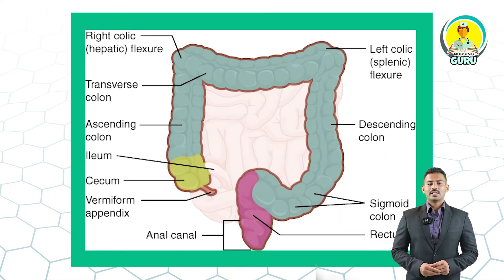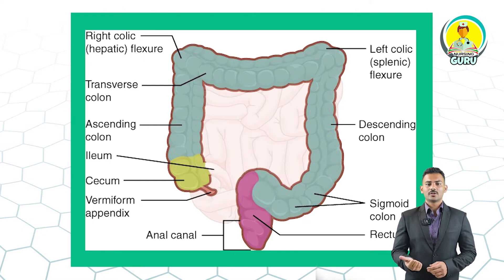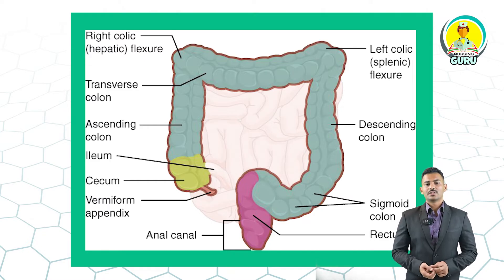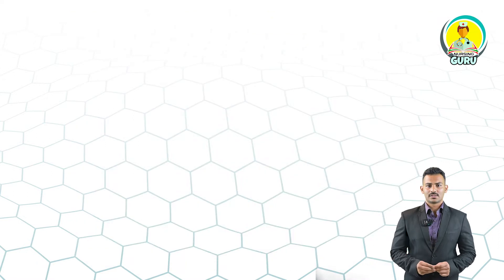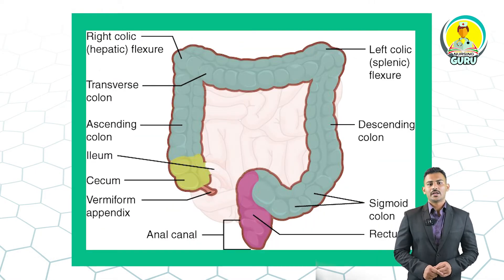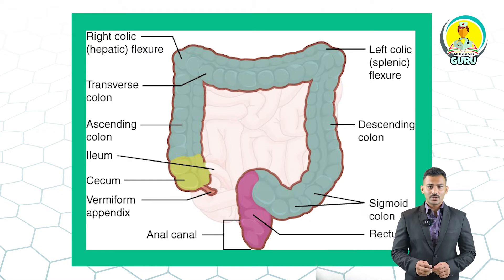The undigested and unabsorbed substances are passed on to the large intestine. The large intestine consists of the cecum, colon, and rectum. The colon has four parts: ascending colon, transverse colon, descending colon, and sigmoid colon. The function of the large intestine includes absorption of some water and minerals. The large intestine also secretes mucus, which helps in adhering the waste particles together and lubricating for easy passage. The undigested and unabsorbed substances, called faeces, are temporarily stored in the rectum until defecation through the anus.